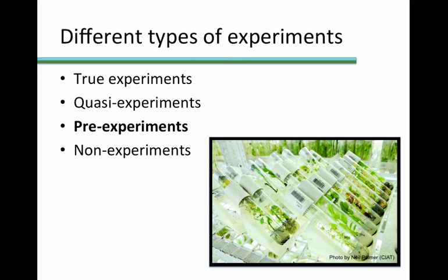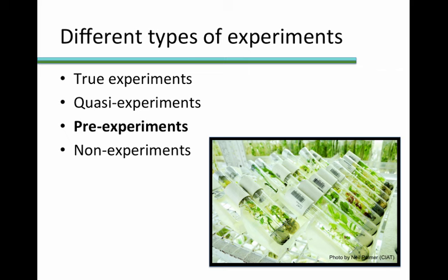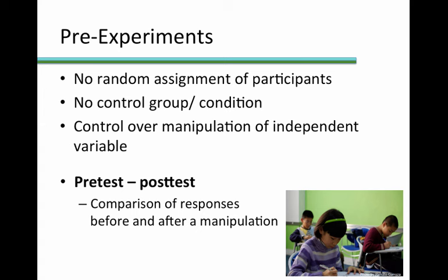Pre-experiments: in addition to the lack of randomization of participants, a pre-experimental design is characterized by no control group. Because of this, it cannot be used to infer causality. This type of design is best for descriptive studies. Pre-test/post-test design is one type of pre-experiment. It allows us to see if participant responses are different after manipulation than before the manipulation. However, we can never be sure that the difference is due to the manipulation alone, since we don't have a control group. The control group would be able to tell us how much change there would be from the pre-test to the post-test without the manipulation.